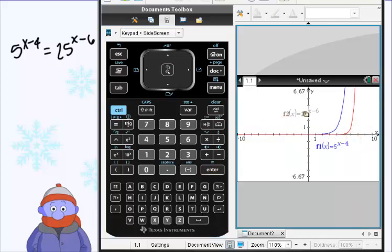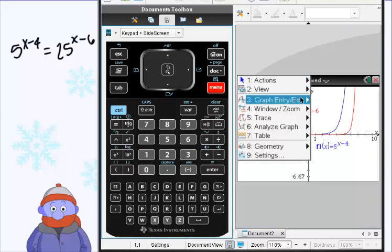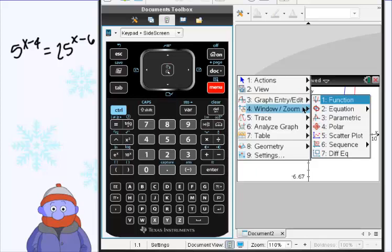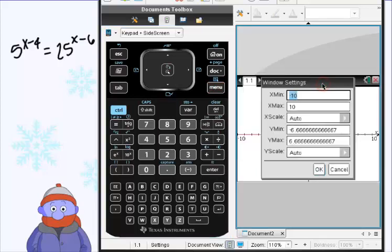So what we can do is adjust the window size and get a little bit better view and maybe we'll see where the point of intersection is. So on this I'm just going to choose menu, I'm going to choose my window zoom and my window settings.